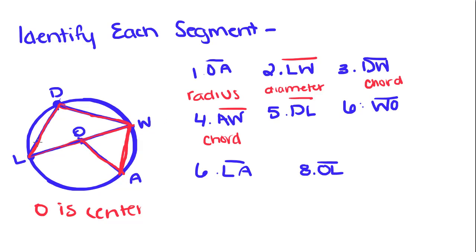DL is also a chord. And WO, this segment right here, connects a point on the circle to the center of a circle, so it is a radius.